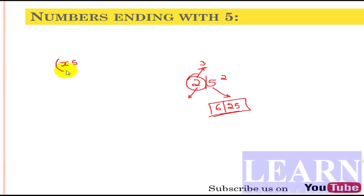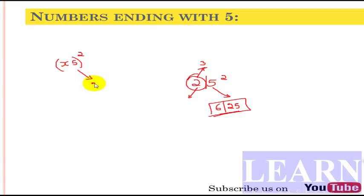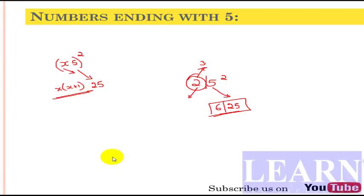Let's take a general example. If the number is of the form x5 — like 25, 35, 45, whatever — x can be any value. Just write 25 at the end because 5 squared is 25, and the first part is x multiplied by (x + 1). It looks like a formula but it's just a trick.